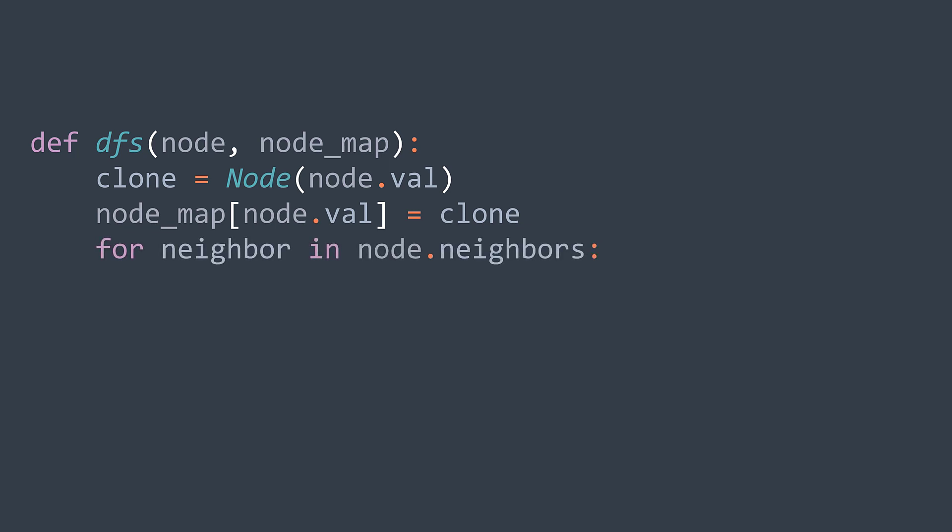Now for each neighbor, we first check that it's in node map, because if it's not, it means that we didn't traverse it. So we call DFS on it to traverse it, create a node for it, fill it, and put it in the node map.